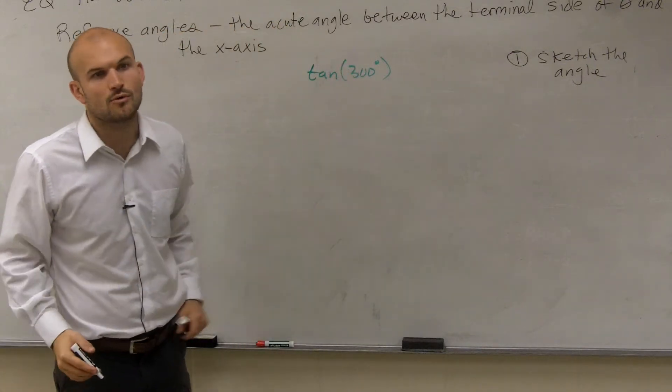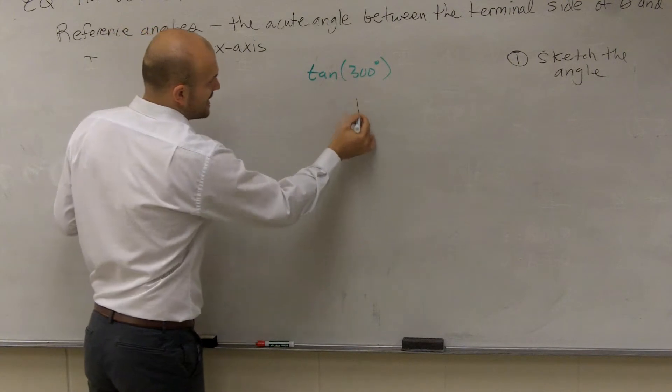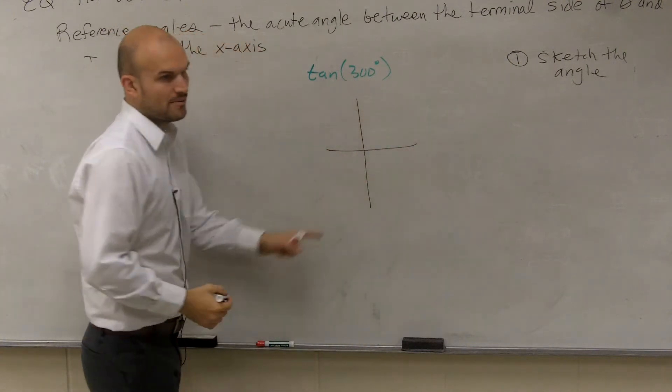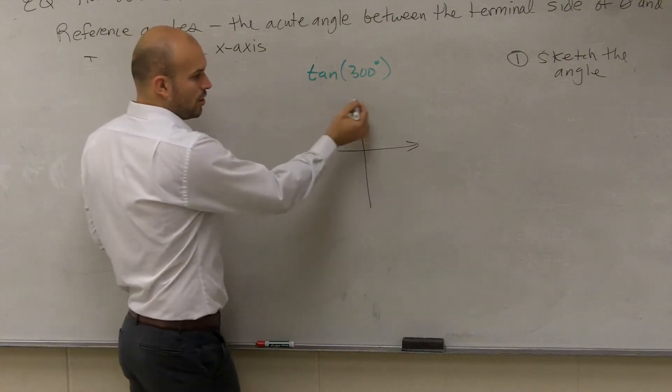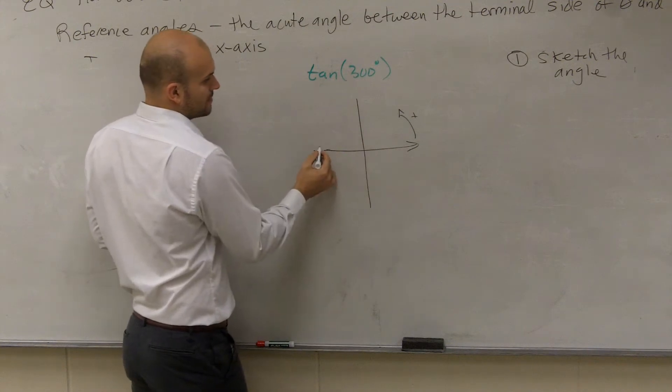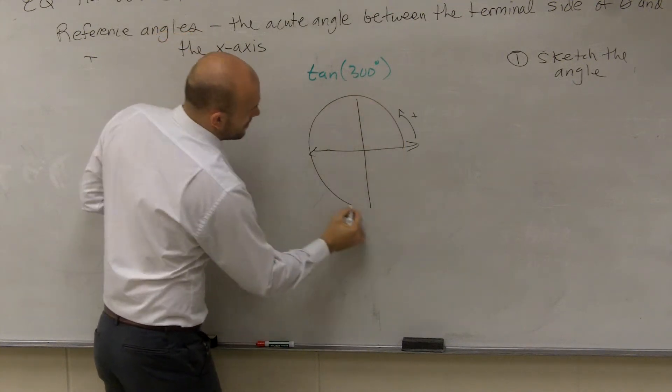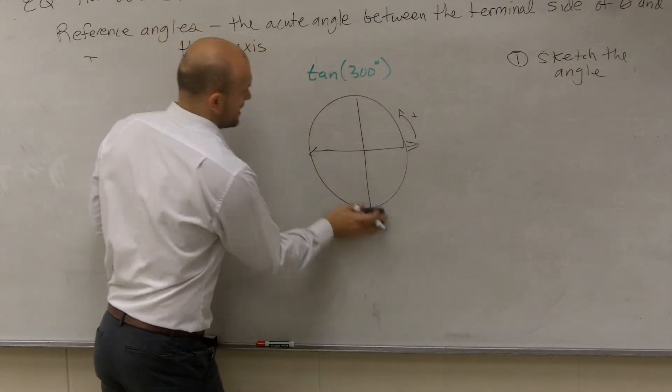The first thing you want to do is sketch the angle. Forget about the tangent, let's just figure out where the angle was. So remember we talked about sketching this angle. Remember we always start on our initial side, and then I'm going to go all the way around in the positive direction. Since it's positive, I go counterclockwise. So there's my angle first.